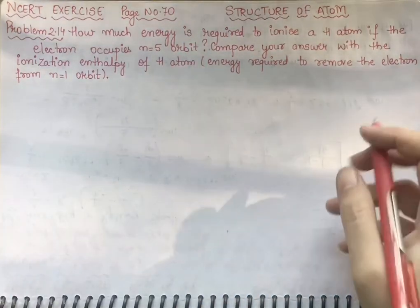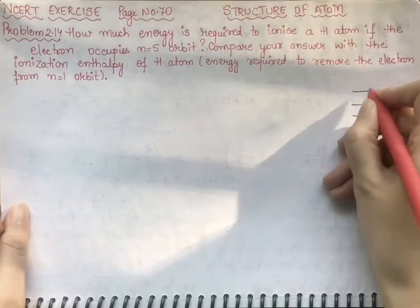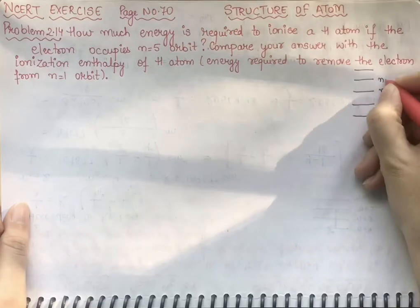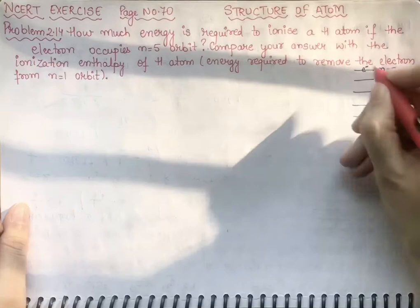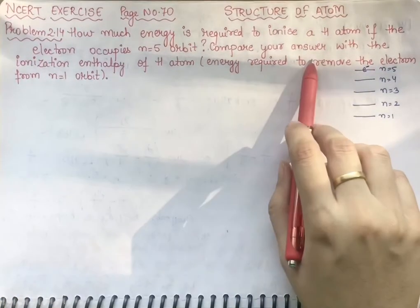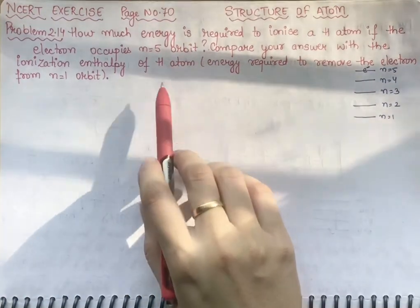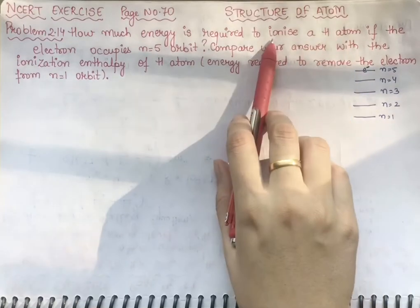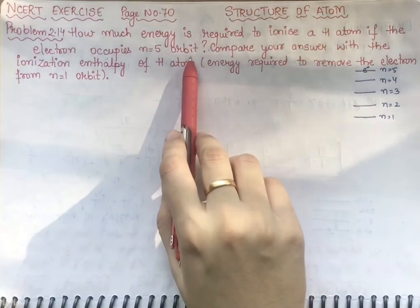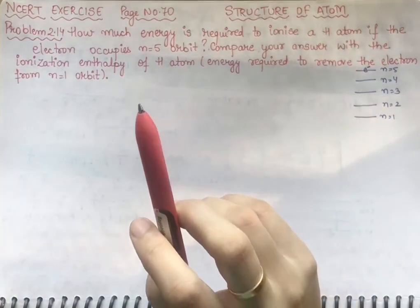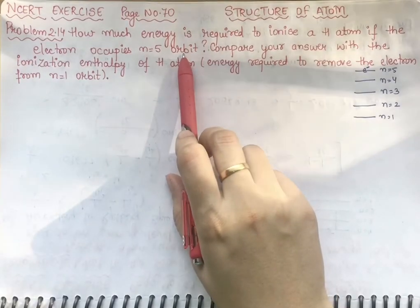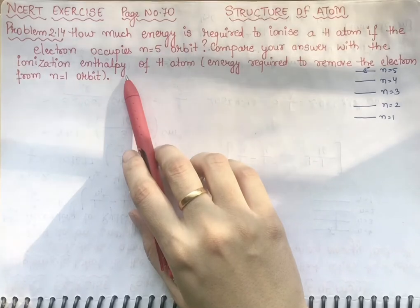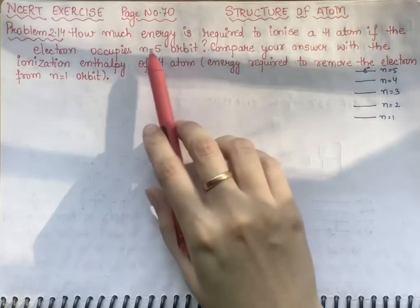You have a hydrogen atom with different orbits. This is your first orbit, second, third, four, and five. The electron is present in the fifth orbit. You have to find how much energy is required to ionize the hydrogen atom from the fifth orbit, and then compare your answer with the ionization enthalpy of the hydrogen atom — that is, removal from the first orbit.